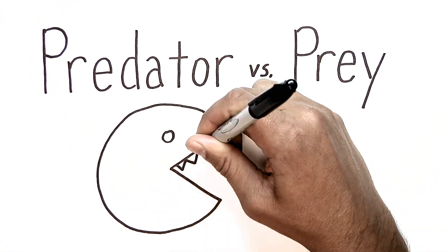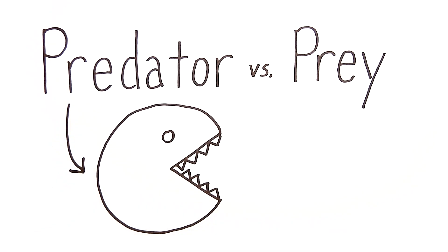Animals that catch, kill, and eat other animals are called predators, and the animals that they eat are called prey.